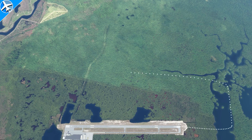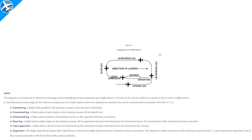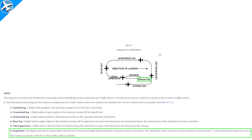This is an airport traffic pattern, and the purpose is to ensure the safe flow of traffic into and out of an airport in an orderly fashion. Before the traffic pattern can be flown, let's look at some basics. Each leg of the traffic pattern has its own name. Taking off from the runway and departing is the departure leg.